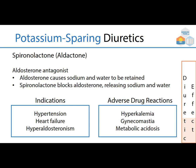Potassium-sparing diuretics: spironolactone, brand Aldactone. This is an aldosterone antagonist. Aldosterone normally causes sodium and water retention, increasing blood pressure. Spironolactone blocks aldosterone, releasing sodium and water and decreasing blood pressure. Indications include hypertension, heart failure, and hyperaldosteronism, but it's really used to counteract the hypokalemic effect of furosemide or hydrochlorothiazide. Adverse drug reactions include hyperkalemia, gynecomastia, and metabolic acidosis.